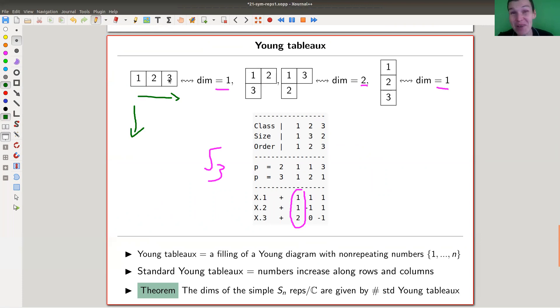And the way to encode it is as follows, you fill your diagram with numbers from one to three, non-repeating just numbers from one to three, such that each row and each column increases. So one, two,